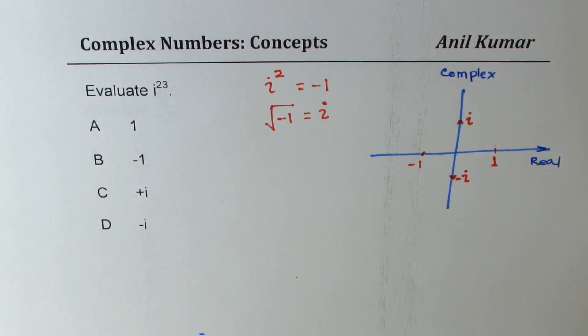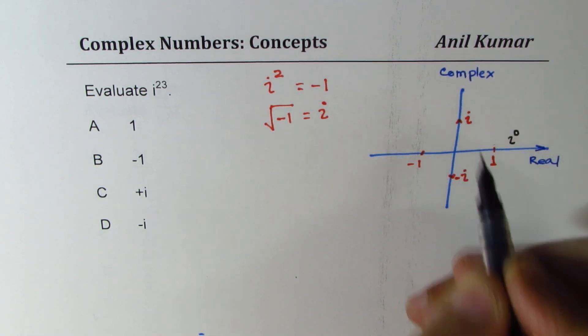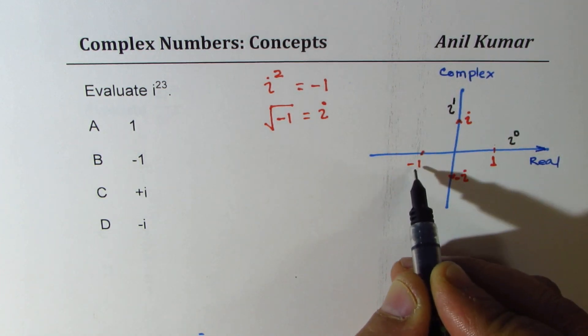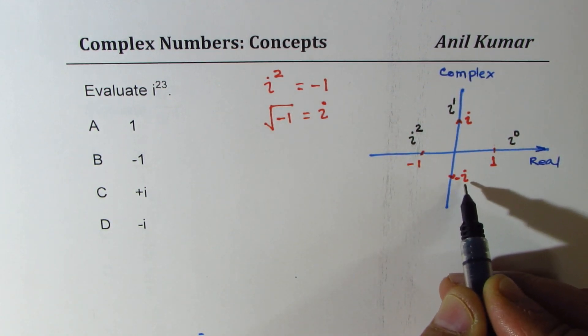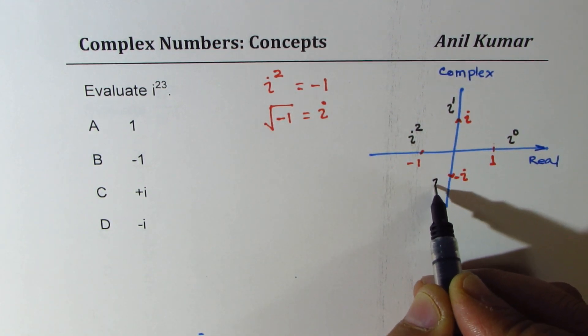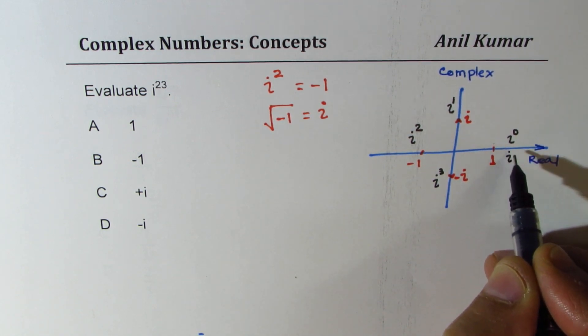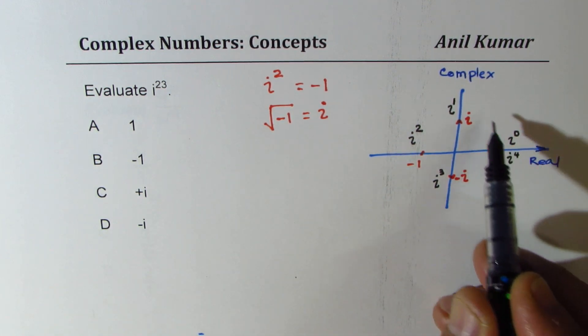Now if you look into powers of i, we could write 1 as i to the power of 0, i as i to the power of 1, minus 1 as i squared, and minus i as i cubed. Then again, i to the power of 4 gives us plus 1. So it goes into this cycle.